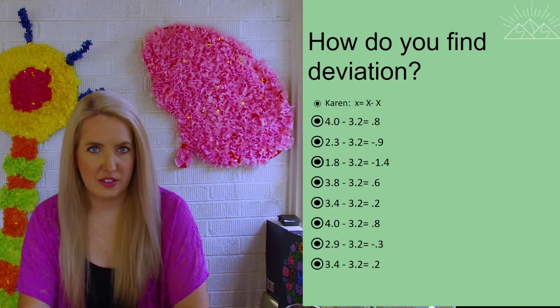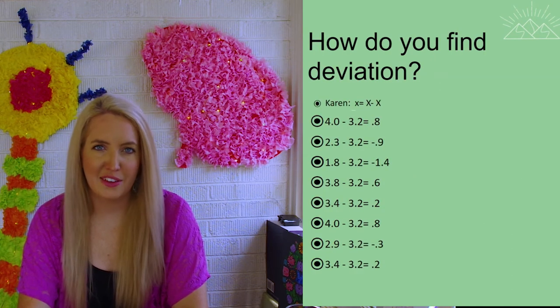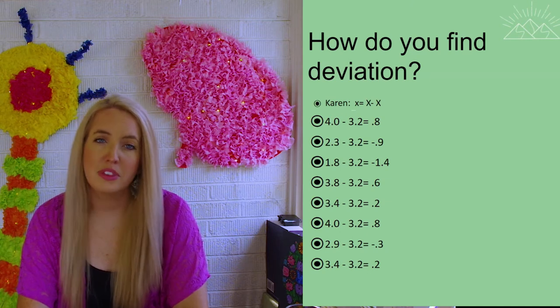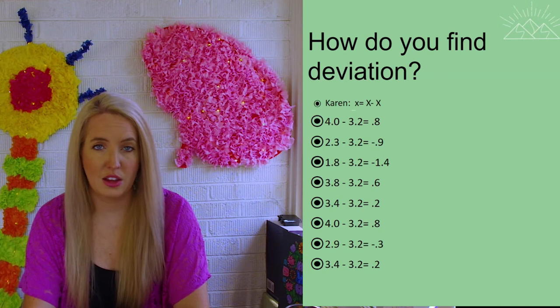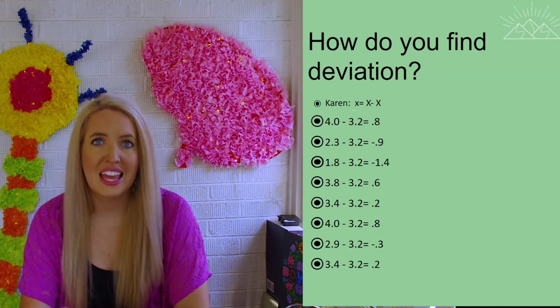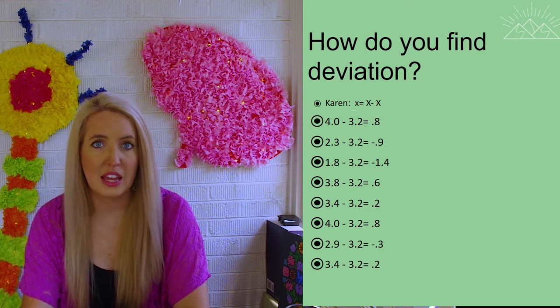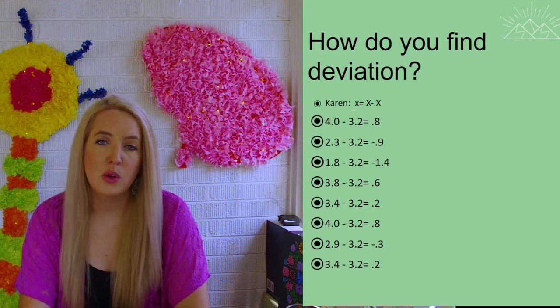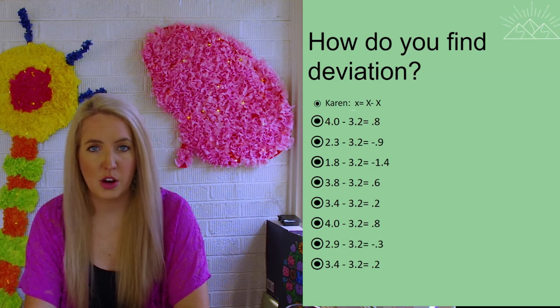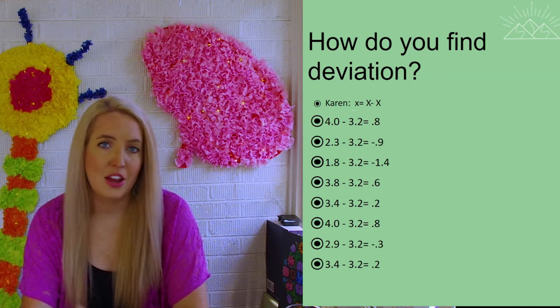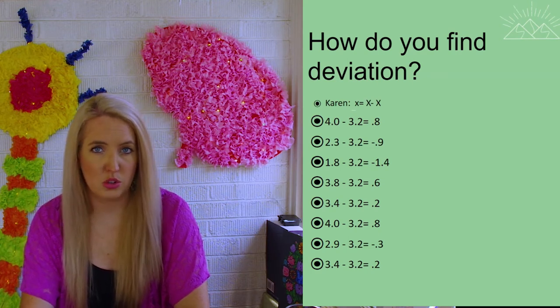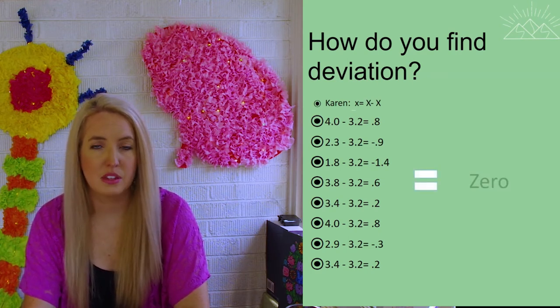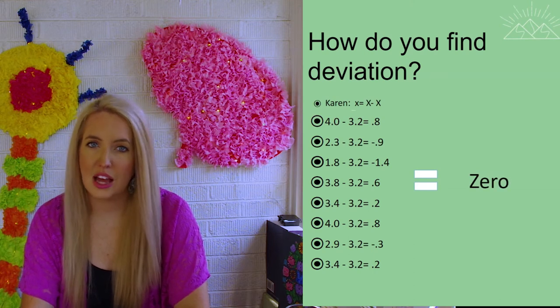Now how do we find the deviation score? You're never going to have to do this yourself in psychology class, but this is some background information that will lead us to the steps that we do need to take when it comes to descriptive statistics. If we wanted to find the deviation score for, say, Karen, for example, we would take each of her scores and subtract it from her average score and total them all up together. The problem is if we did this, the total score would actually end up being zero. So this does not quite work.